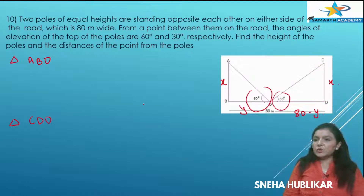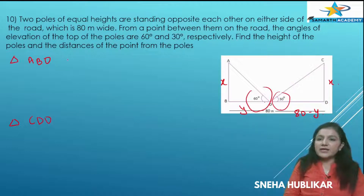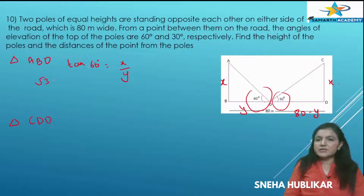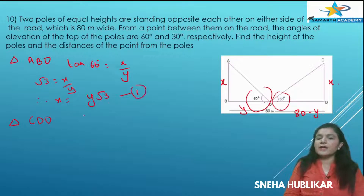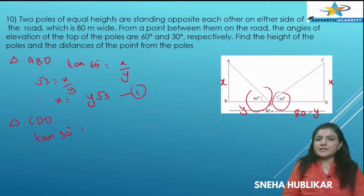In triangle ABO, the opposite side is X and the adjacent side is Y, so we will be using tan. Tan 60° equals X by Y, so root 3 equals X by Y, therefore X equals Y root 3. Mark this as equation 1. In triangle CDO, tan 30° equals X by OD, which is 80 minus Y.